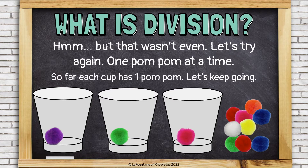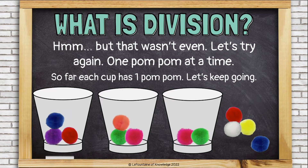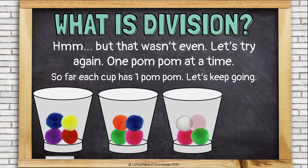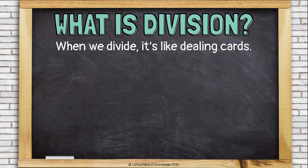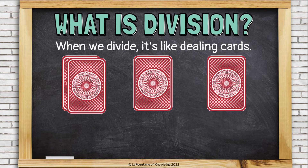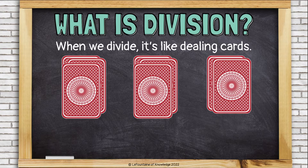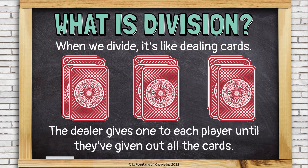So far, each cup has one pom-pom. Let's keep going. There — if the cups are even, each cup has four pom-poms. When we divide, it's like dealing cards. The dealer gives one card to each player until they've given out all the cards, and this is how they make sure that each player gets the same number of cards.